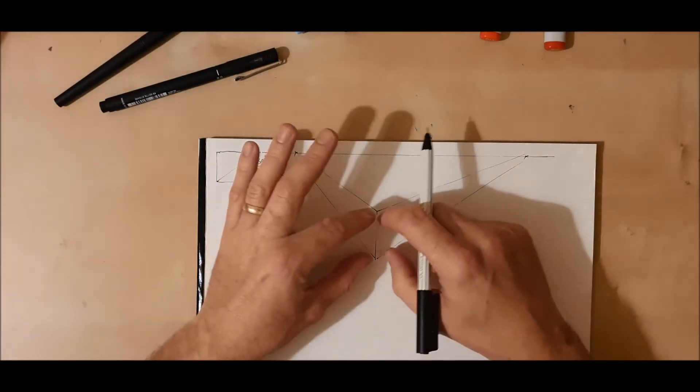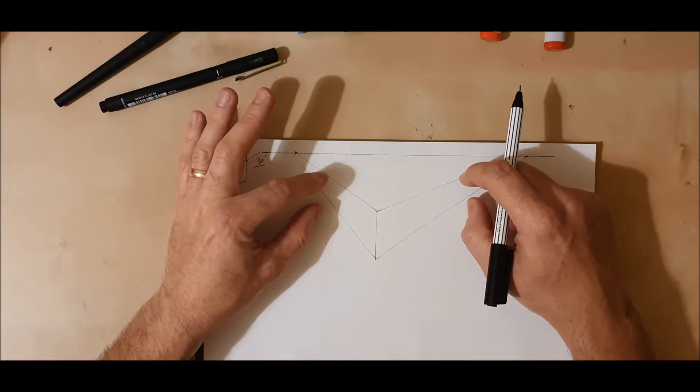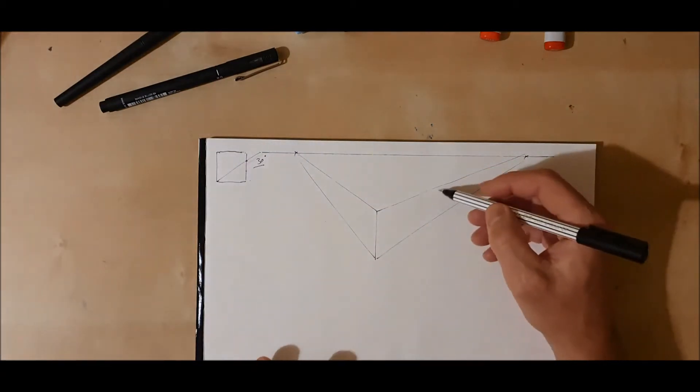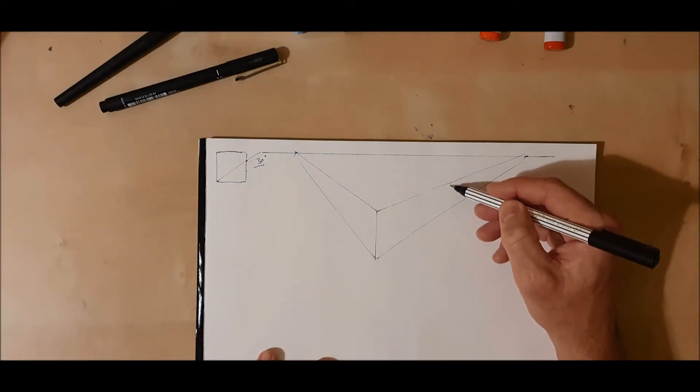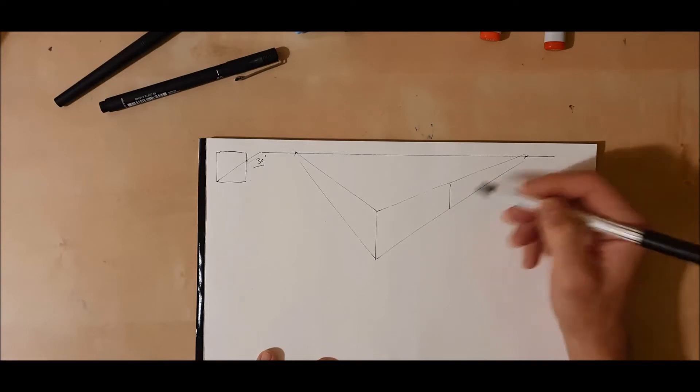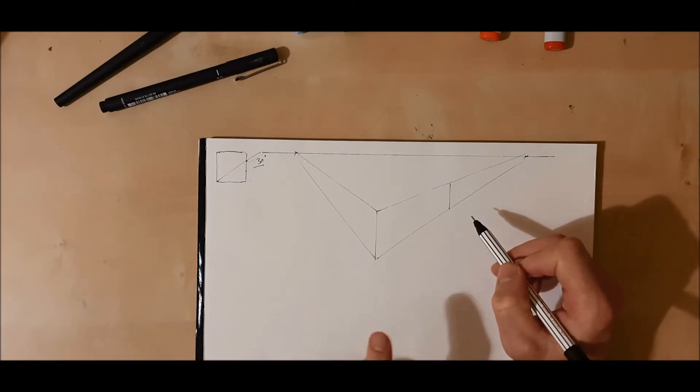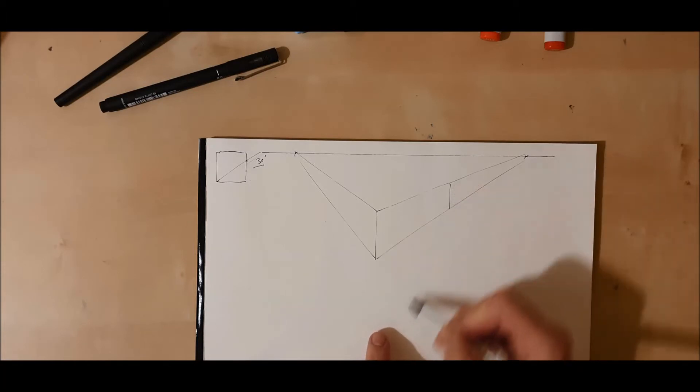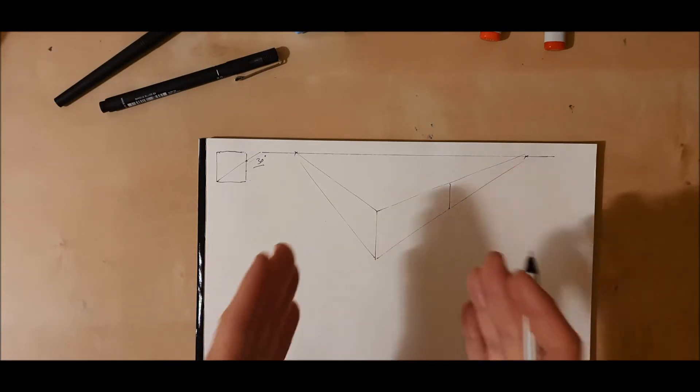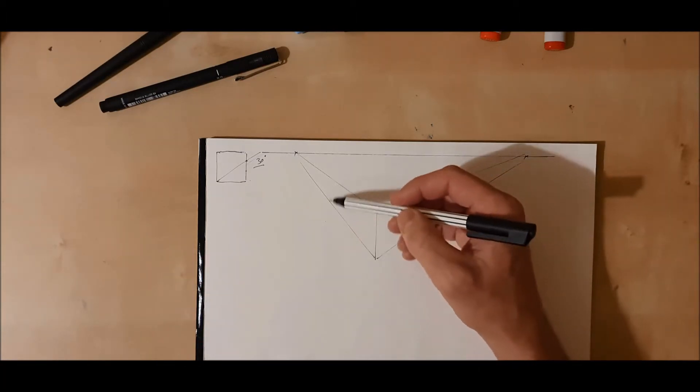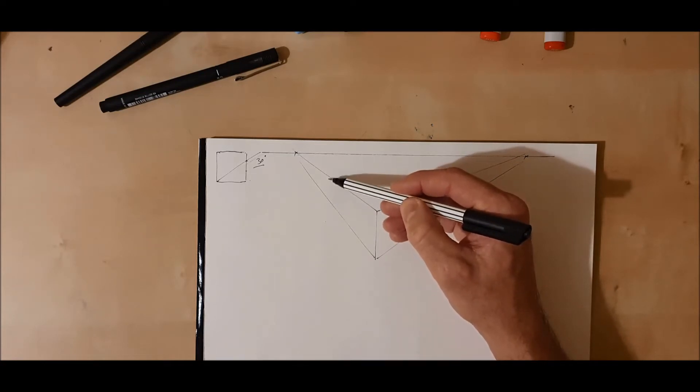So I've got the two faces of my object coming out. I'm going to draw another line here coming straight down. This is going to be two point perspective. Another drawing will be three point perspective where we have this coming down this way and that will make the object look as if it's dropping down as we look at it. But for now I'm just going to come straight down.